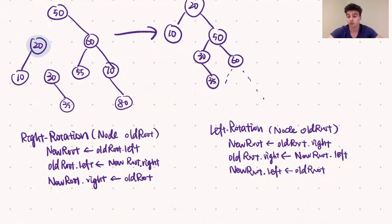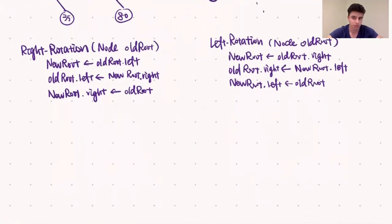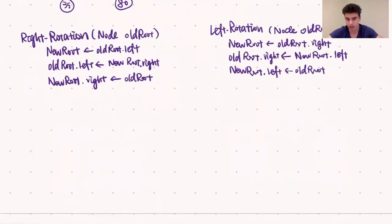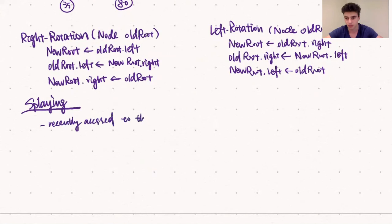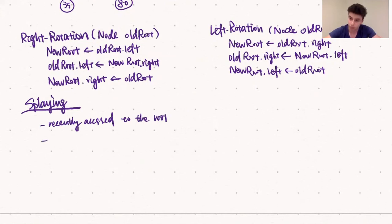Now that we've discussed algorithms for rotations both left and right, we can talk about splaying. Splaying basically brings the recently accessed node to the root of the tree. This naturally brings all nodes close to the recently accessed node close to the root as well. This is how the splay tree maintains its guarantee that recently accessed elements are quick to access again.